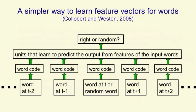There's a much simpler way to learn feature vectors for words. This is work by Collobert and Weston. And what they did was learn feature vectors for words and then showed that the feature vectors they learned were very good for a whole bunch of different natural language processing tasks. They're not trying to predict the next word. They're just trying to get good feature vectors for words.